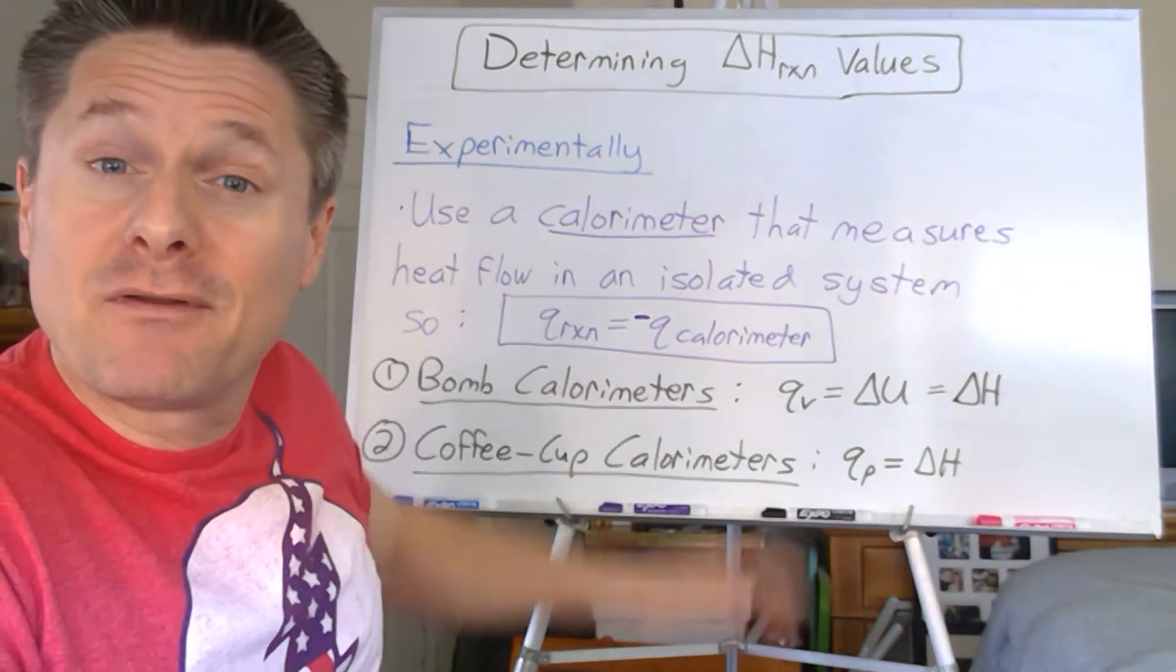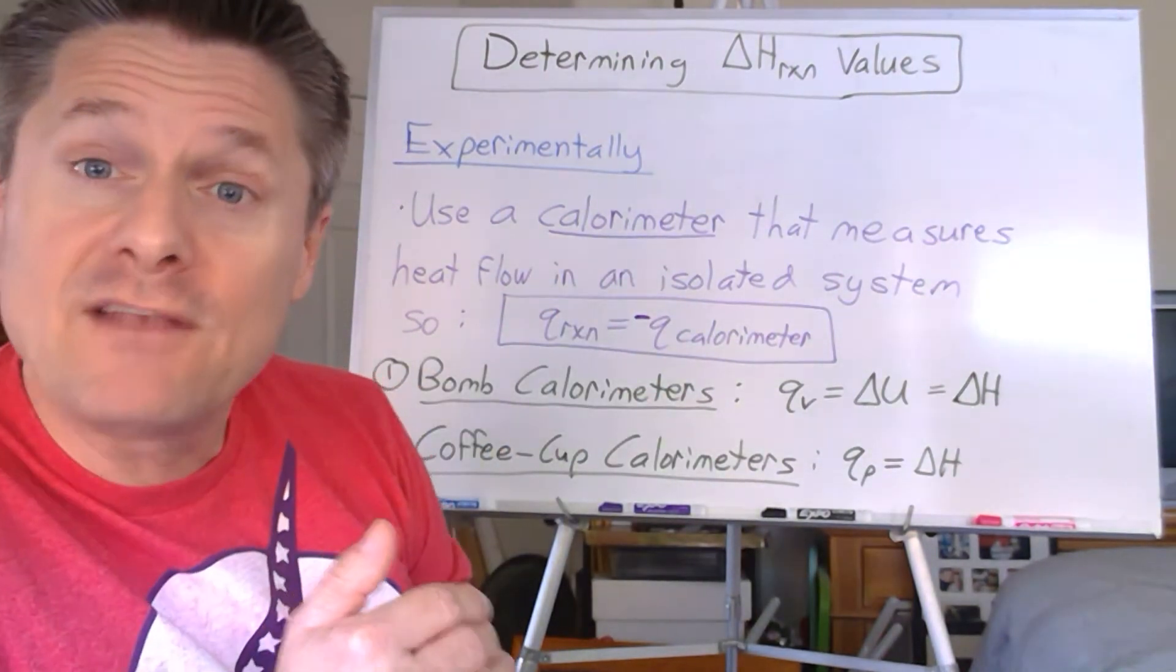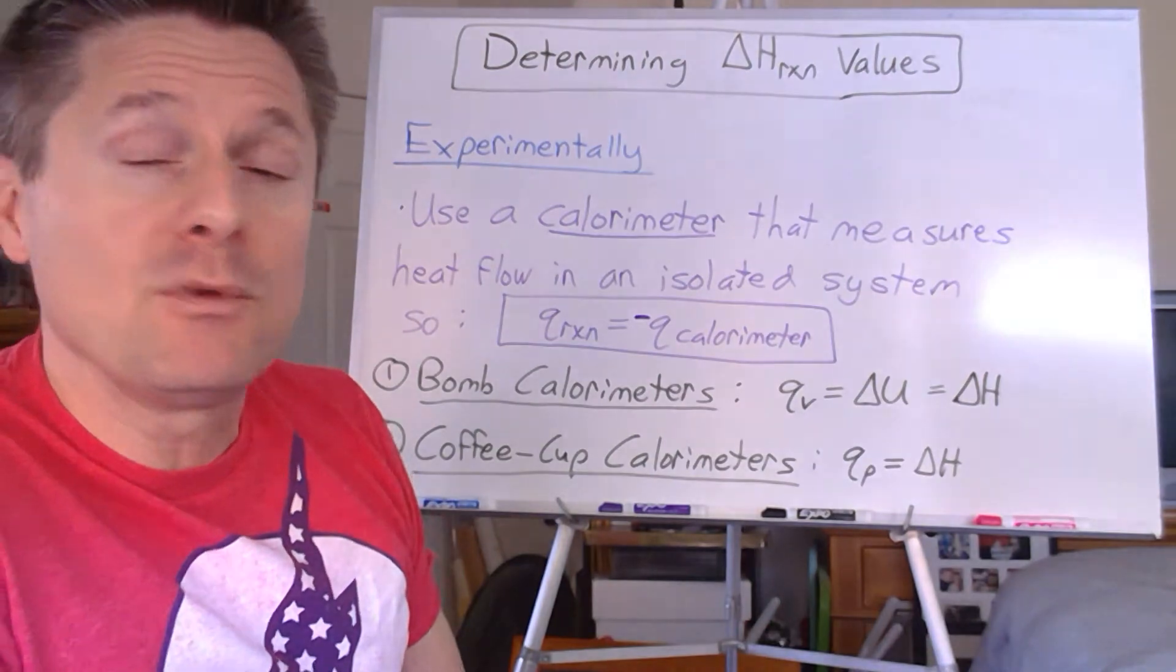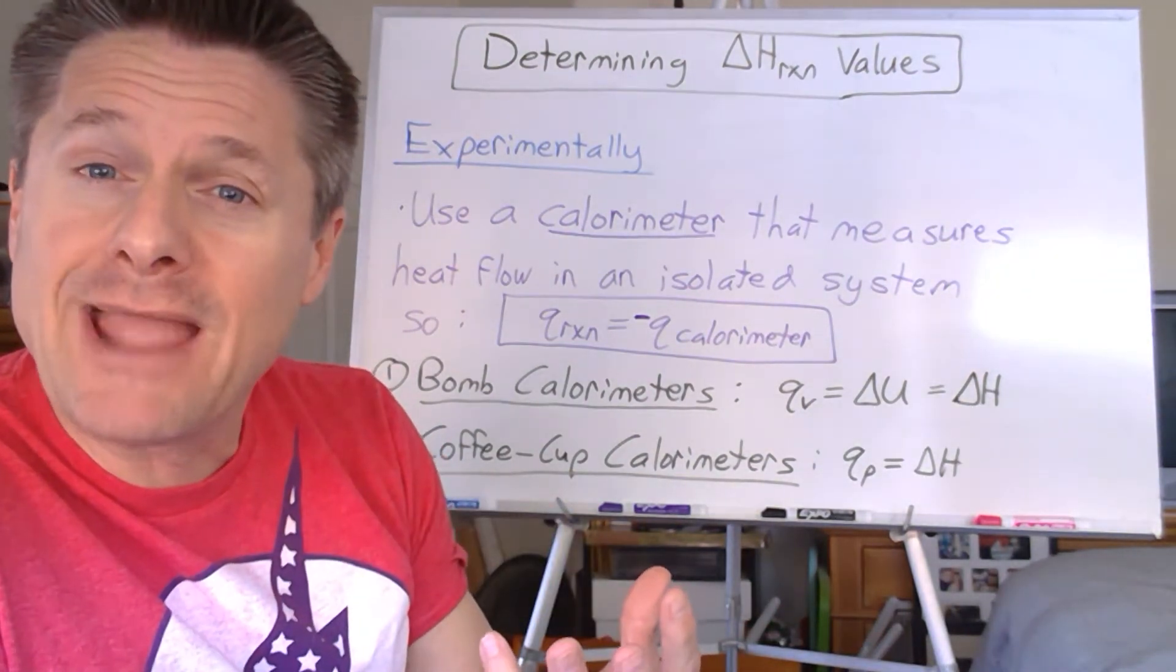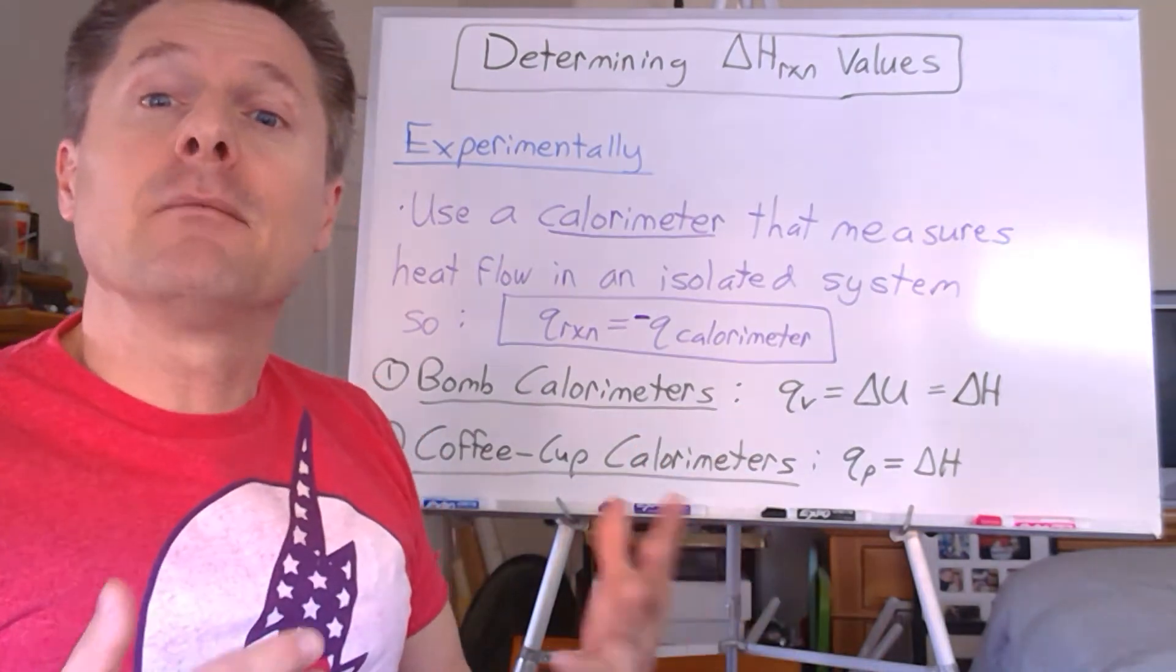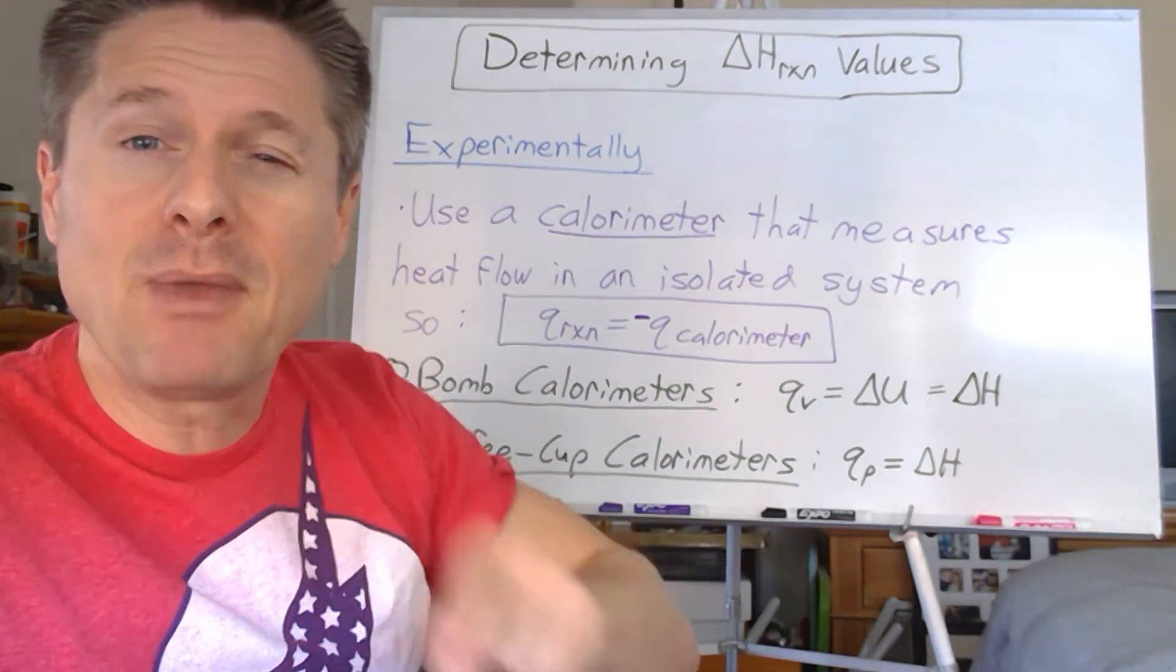We'll do one example of each using this as our basic fundamental from the first law of thermodynamics. That's experimental. Let's look at some theoretical ways. Maybe we don't have a calorimeter with us, or maybe we just want to do a back-of-the-napkin calculation to get an estimate of a delta H reaction that we can use.